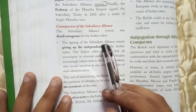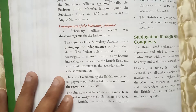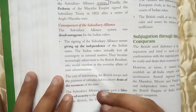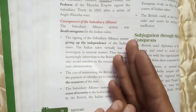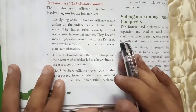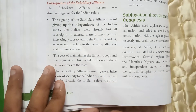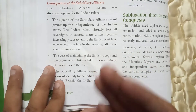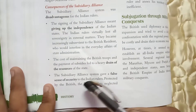The Subsidiary Alliance was disadvantageous for Indian rulers. By signing it, they were essentially giving away their independence, since the British were managing all external matters. This also led to a drain of wealth and resources from India. The maintenance of British troops was funded from Indian resources, which benefited the British greatly.